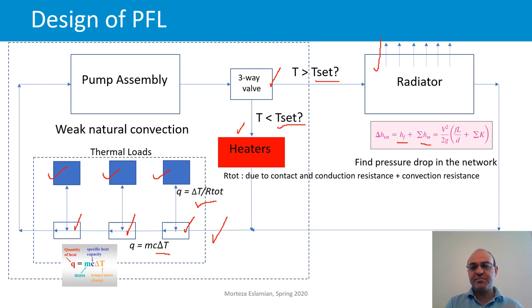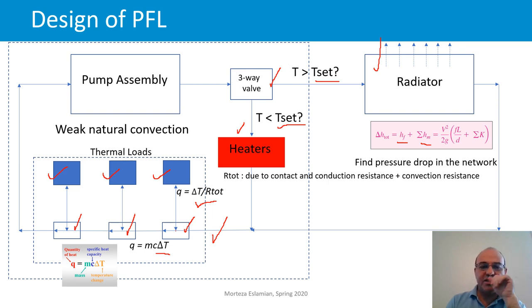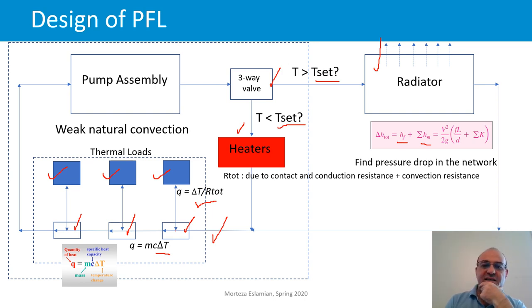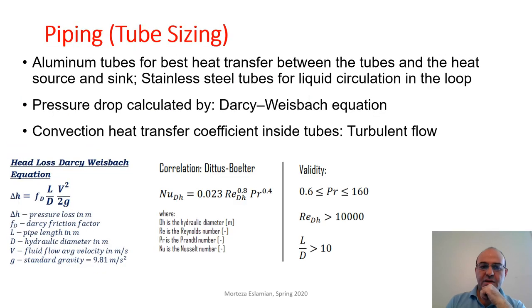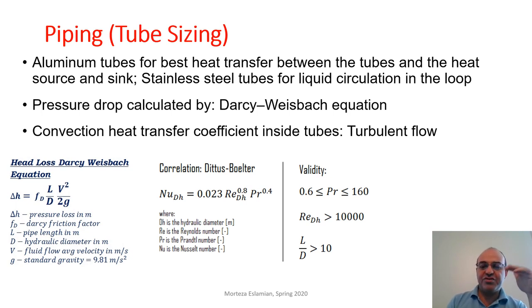Based on the set Reynolds number — which defines the fluid velocity in the pipes — we can calculate the flow rate. With the flow rate we can calculate the pressure losses, plot the system curve for the pump, and then decide the normal operating point of the system and choose the pump accordingly. Additionally, aluminum tubes are used for heat transfer between tubes and heat sources or heat sinks because they have low thermal resistance. Stainless steel tubes are used for the rest of the loop connections where heat transfer is not the goal.